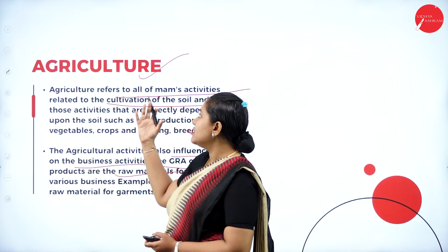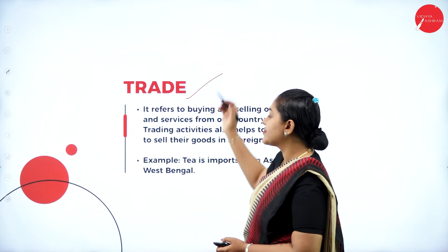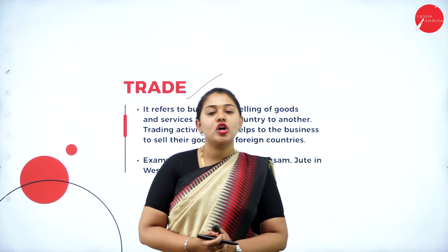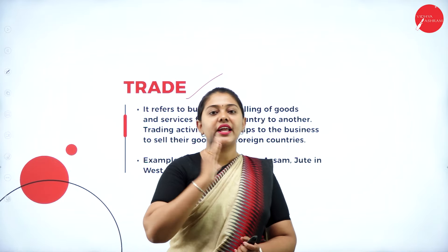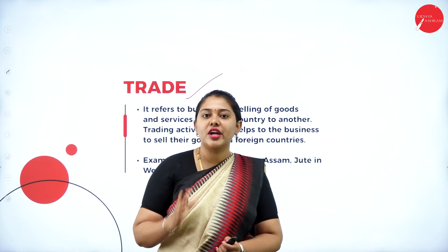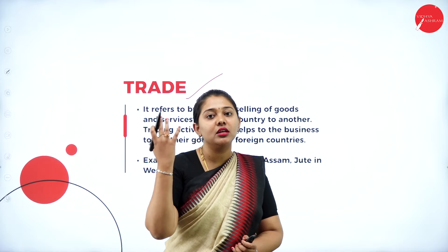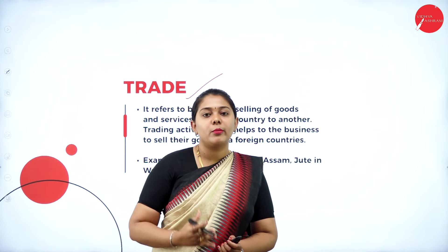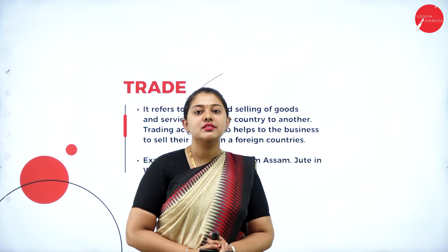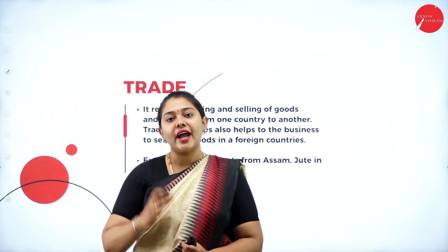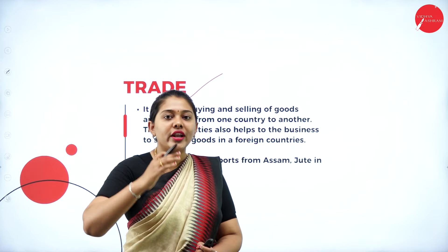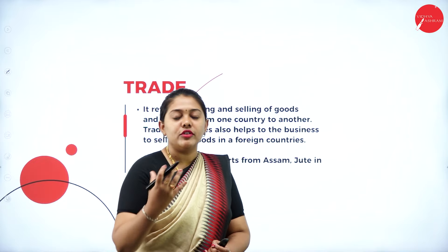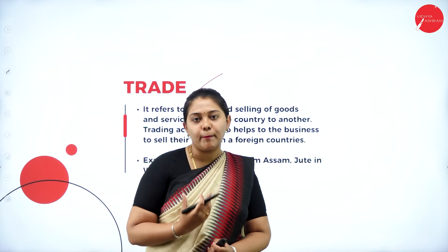Agriculture refers to all activities related to the cultivation of soil — production of vegetables, crops, feeding, and breeding. We have horticulture and many other forms. Agricultural activities also influence business — agricultural products and raw materials are used in various industries. Cotton is the raw material for garment industries. If agriculture is not taken care of properly, the major raw materials for industries will not be available. Natural environment is very important for agriculture.